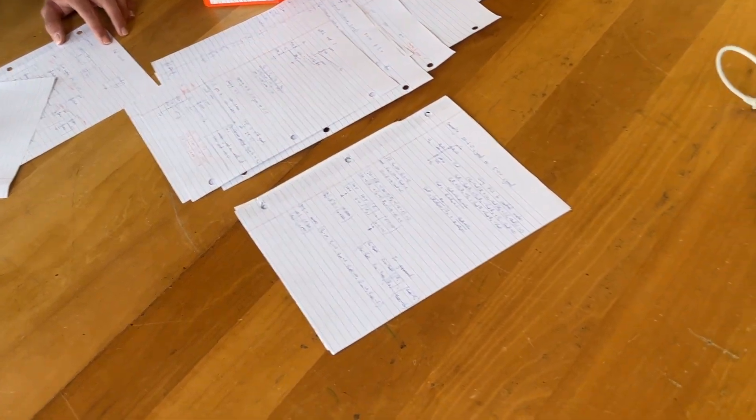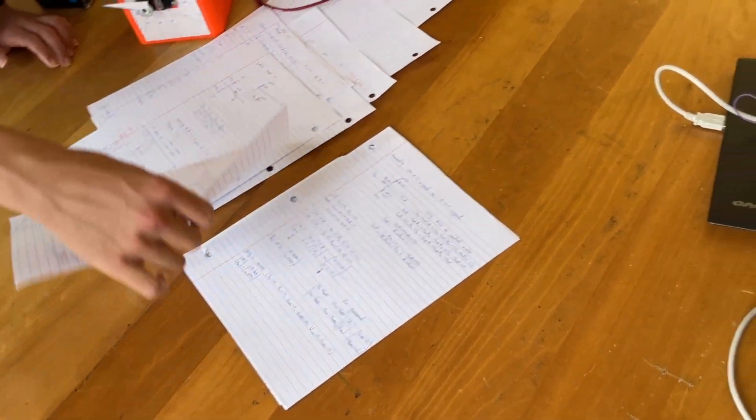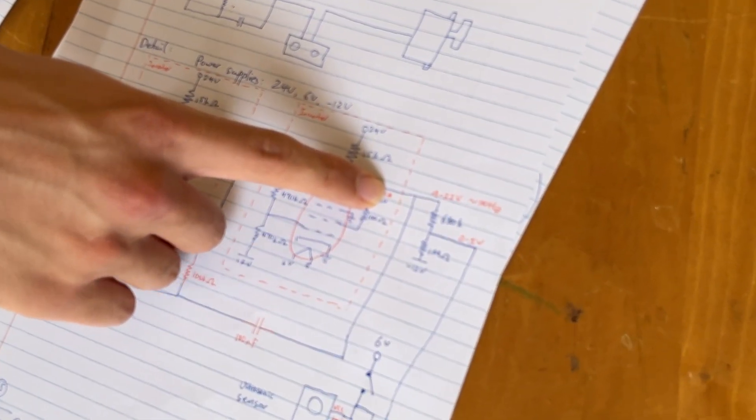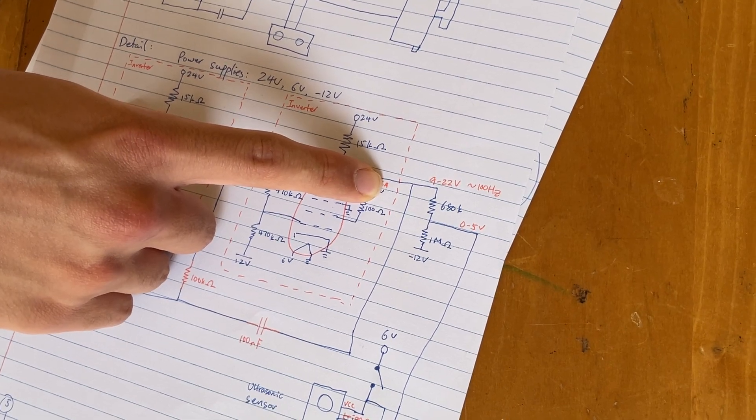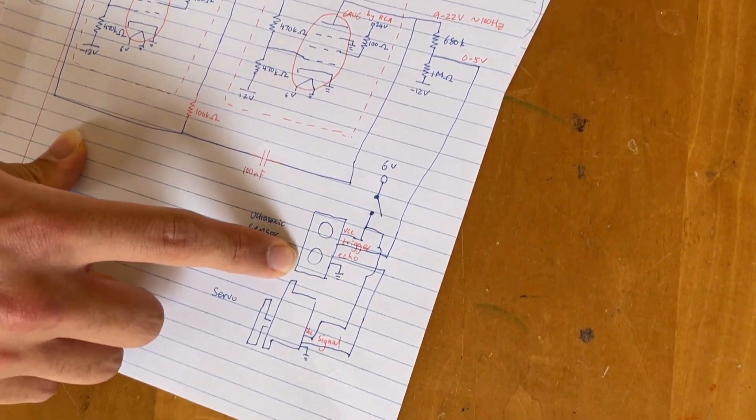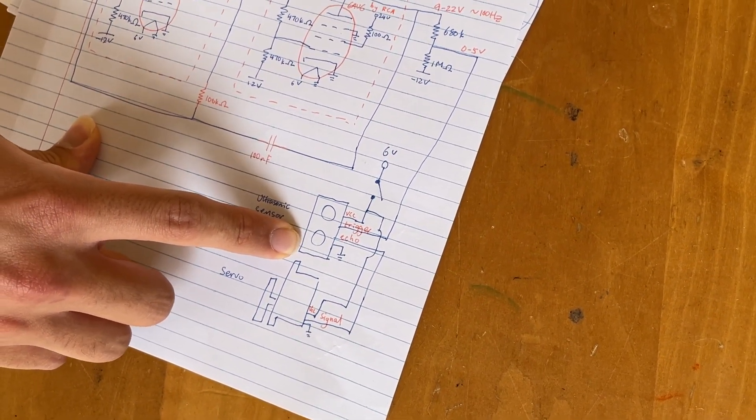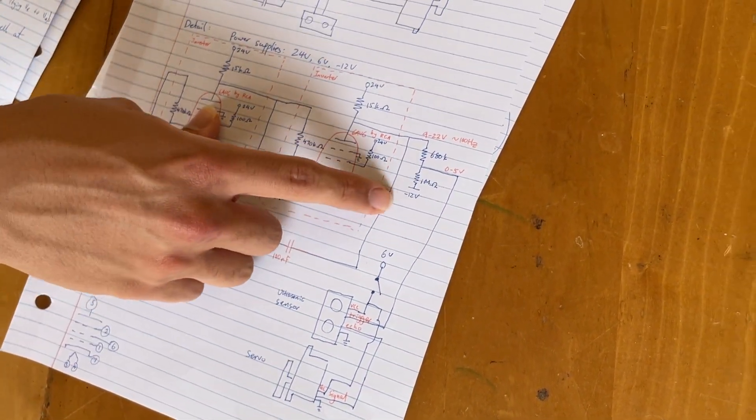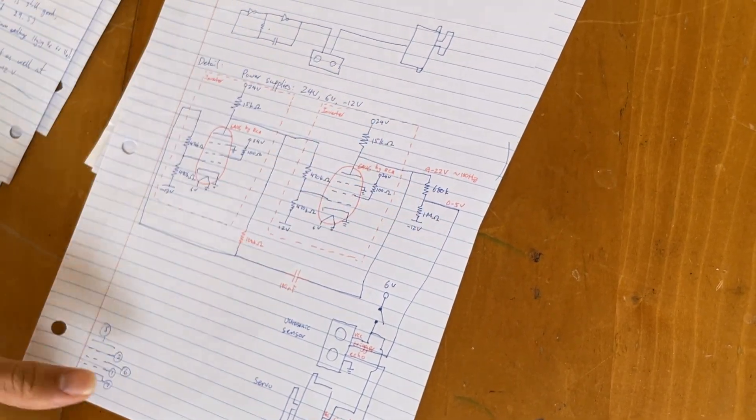So now, one more problem is that if you just look at the output here, this is an output that's flipping between 24 and 6 volts. But the ultrasonic sensor takes a signal that's between 0 and 5 volts as input. So I had to experiment around with a resistor divider to make sure that it would convert the voltages.